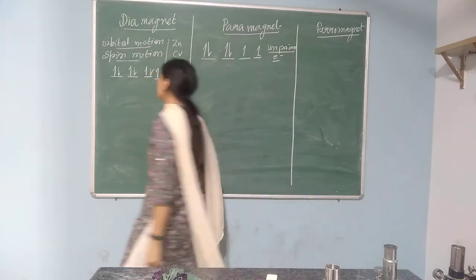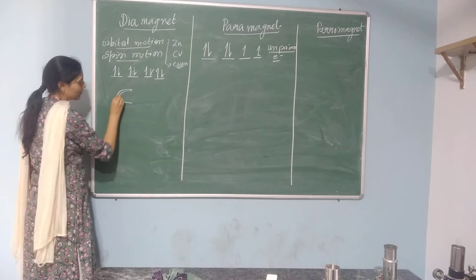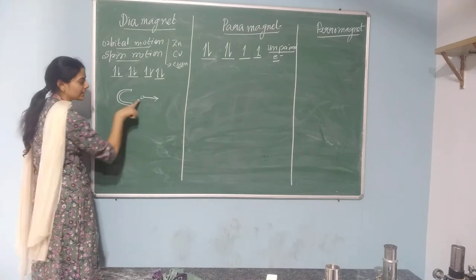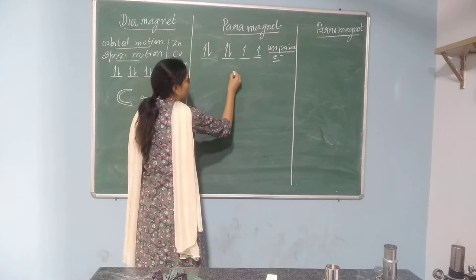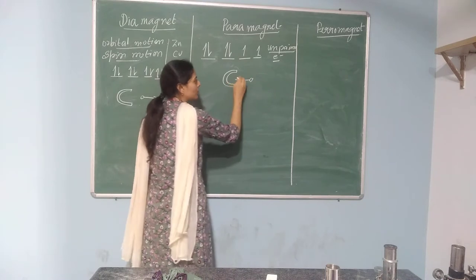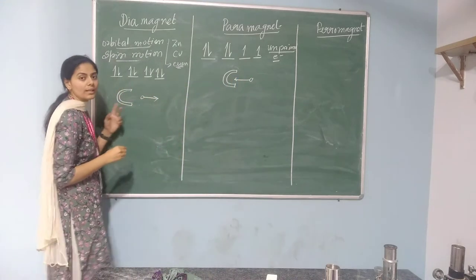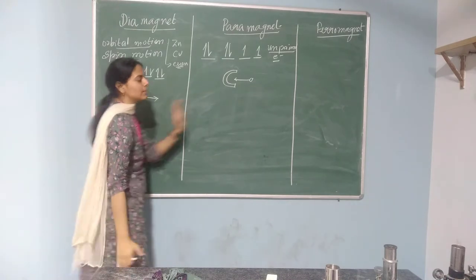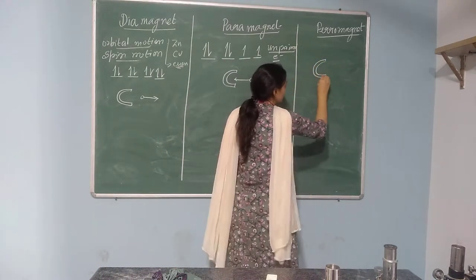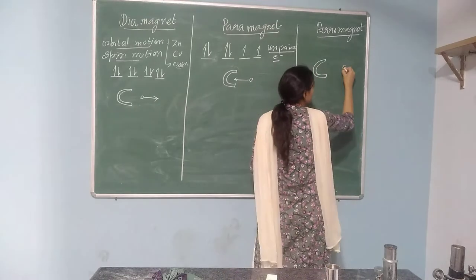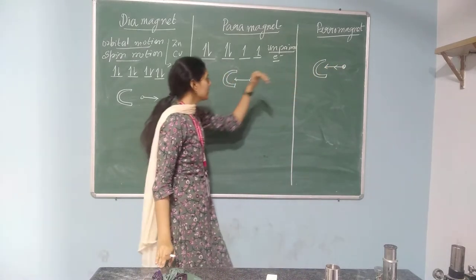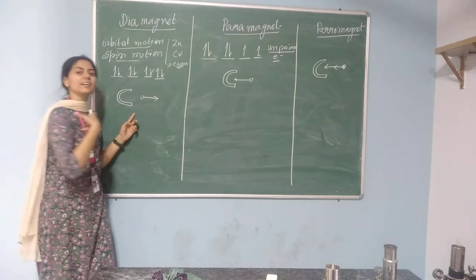Starting from diamagnetic: diamagnetic material is weakly repelled by the magnetic field. Paramagnetic material is weakly attracted to the magnetic field. Ferromagnetic material is strongly attracted towards the magnetic field. So this is strongly attracted, this is weakly attracted, and this is weakly repelled.